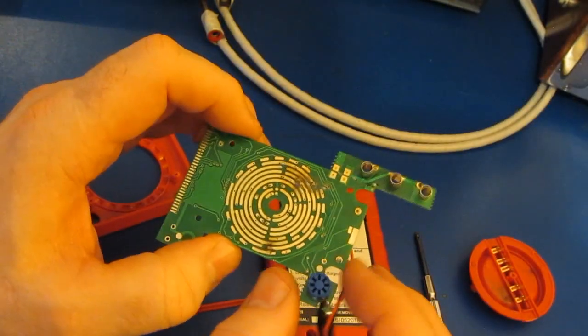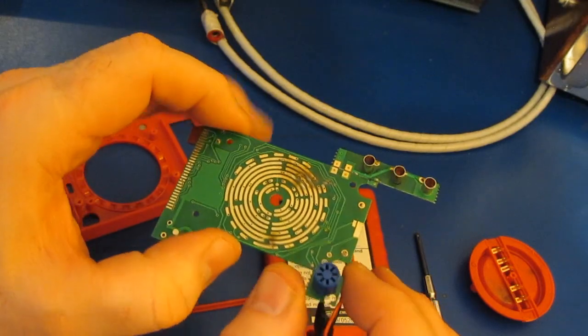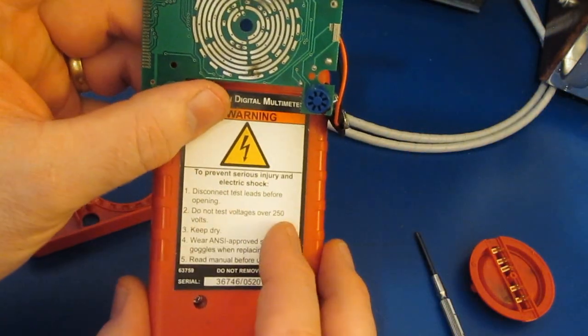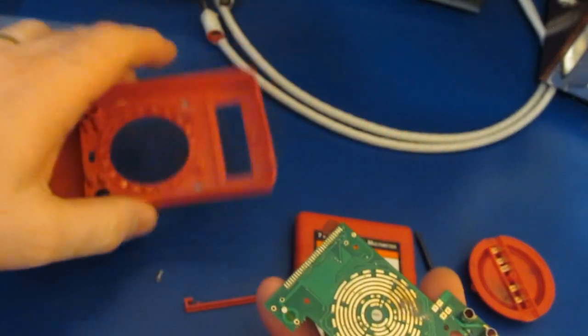It does appear from these tests that the new Harbor Freight meter can't withstand the same voltage levels that the older versions that I have will. But again, they do mark the meter now do not test over 250 volts, and of course that's marked on the front of the meter as well.